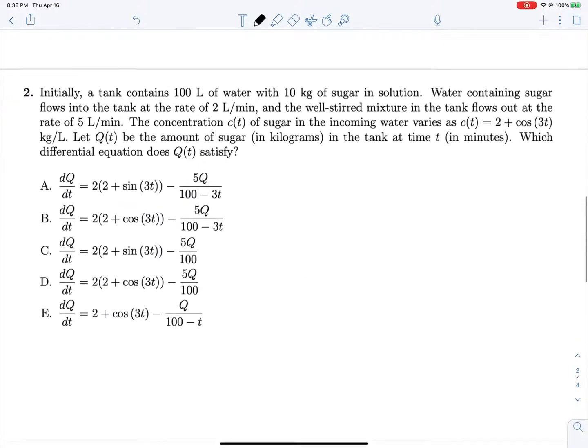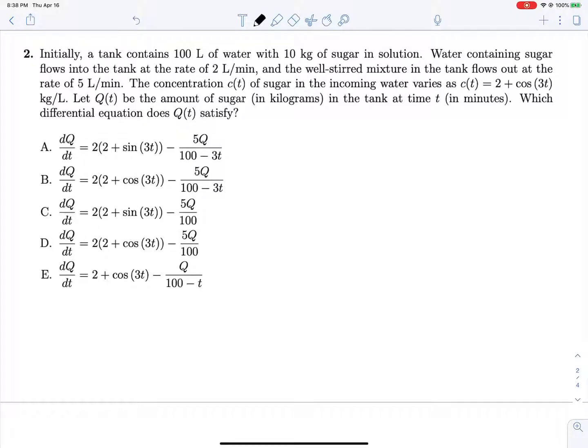Same thing - and actually this is the last one I have on here. Although you can definitely expect to see one of these on the final. They do like these questions. So initially we have a tank with 100 liters of water with 10 kilograms of sugar in solution - oh, they're really switching it up on us. So dq/dt plus rate out of 5 liters per minute and a rate in of 2 liters per minute, so we have 100 minus 3t down here because 2 in, 5 out, 100 to start with. We're losing 3 liters every minute times q equals ri times ci, where our rate in is 2 and our concentration varies with time: 2 plus cosine 3t.